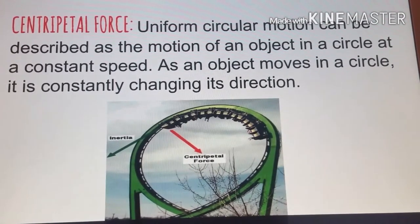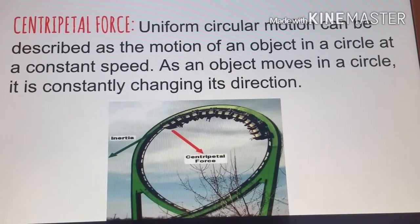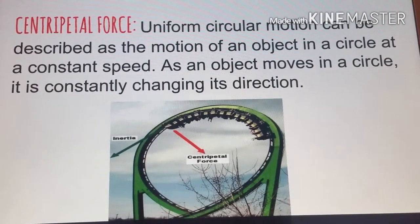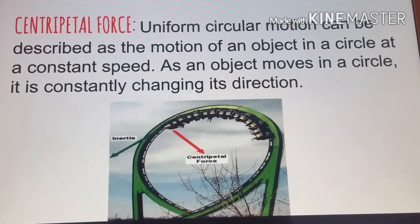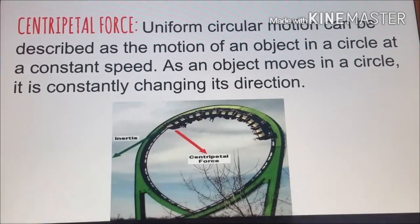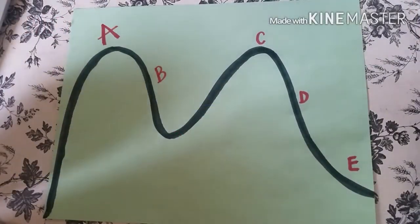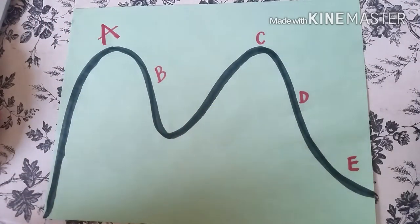The centripetal force, uniform circular motion, can be described as the motion of an object in a circle at a constant speed. As an object moves in a circle, it is constantly changing its direction.